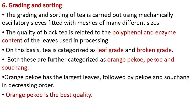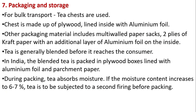Grading and sorting of tea is carried out using mechanically oscillatory sieves fitted with meshes of many different sizes. The quality of black tea is related to the polyphenol and enzyme content of the leaves. On this basis, tea is categorized as leaf grade and broken grade, both further categorized as Orange Pekoe, Pekoe, and Souchong. Orange Pekoe has the largest sieves, followed by Pekoe and Souchong in decreasing order. Orange Pekoe is the best quality.